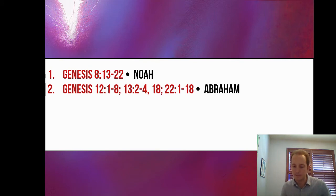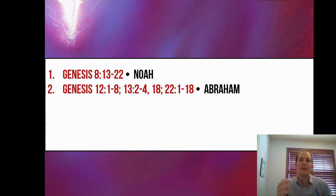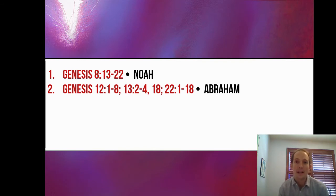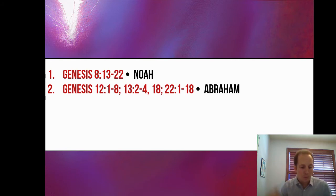Our next account takes us to Genesis 12, and we're reading of Abraham — at this point in his life his name is Abram. In Genesis 12, 13, 18, and 22 we see that through Abraham's life he had developed a custom, the habit of worshiping God all through his travels. That's what Abraham is known as — the man who journeyed. He didn't really know where he was going, although God had given him the promise of this promised land. But Abraham, this pilgrim who journeyed to many different places, would along his life's journey make these altars and worship the Lord.